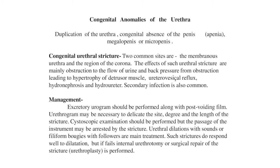Among these, one is the congenital urethral stricture. The two common sites are the membranous urethra and the region of the corona. The effects of such urethral strictures are mainly obstruction to urine flow, and back pressure from obstruction leading to hypertrophy of the detrusor muscle, ureterovesical reflux, hydronephrosis, and hydroureter.